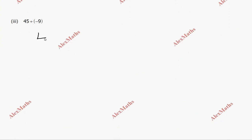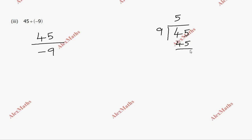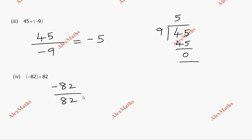Sub-division 3: 45 divided by minus 9. 9 times 5 is 45, so the answer is minus 5. Sub-division 4: minus 82 divided by 82. It is the same number, so dividing gives minus 1.